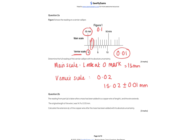Question 2b follows on from the measurement above, taken after the wire extends. We calculate the extension: 15.02 − 14.9 = 0.12 mm. The absolute uncertainty is the same as the resolution: ±0.01 mm.